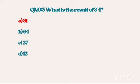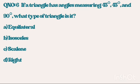Question number 6. If a triangle has 245 degree angles and 190 degree angles, what type of triangle is it? And the answer is right.